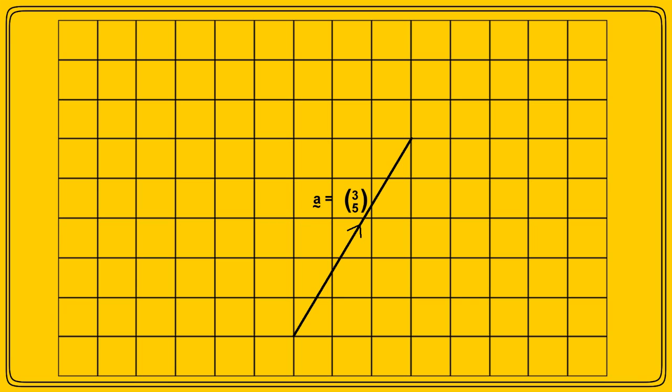Here's vector A, which is 3 over 5 — its horizontal component is 3 units going to the right, as the 3 is positive, and its vertical component is 5, going upwards, as the 5 is also positive.